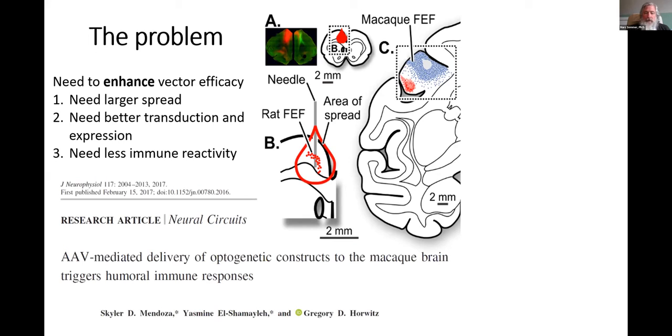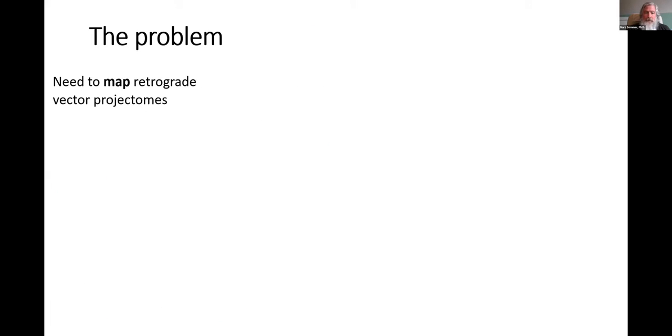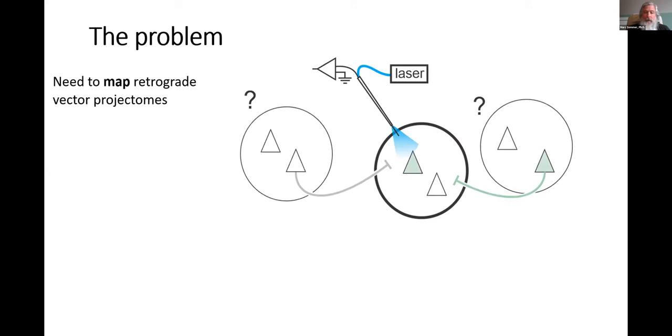There's a lot of immune reactivity in non-human primates. It's a very sophisticated immune system, both in its innate and adaptive components. Second, if we want to really get at circuit specificity and look at projection neurons in one area sending signals to another area, we need to map these retrograde vector projectomes.